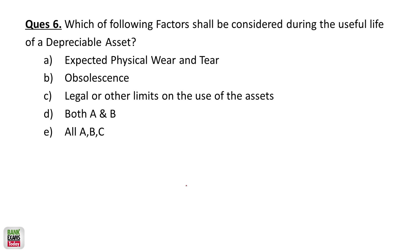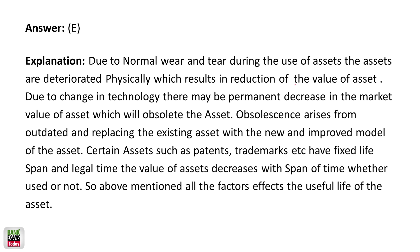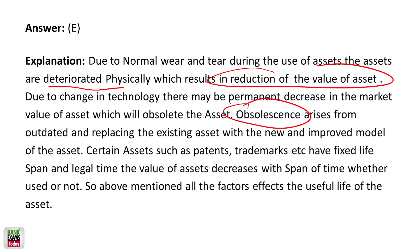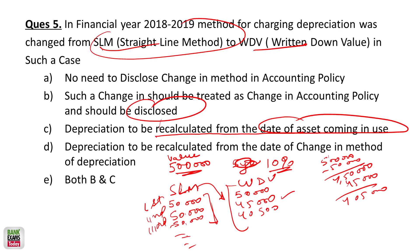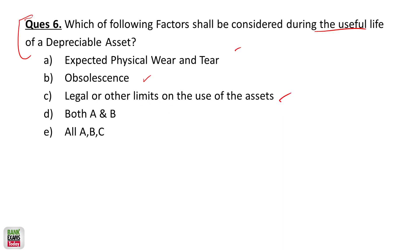Which factors shall be considered in determining the useful life of a depreciable asset? The factors are: expected physical wear and tear from normal use, obsolescence due to new technology, and legal or other limits on the use of the asset. As per AS6, all three factors — wear and tear, obsolescence, and legal limits — must be considered. All options A, B, and C are correct.